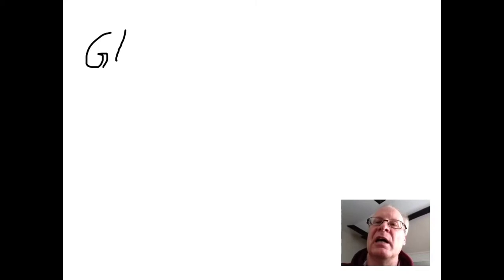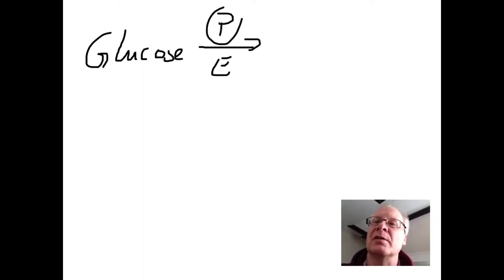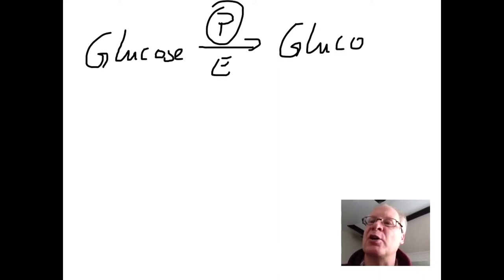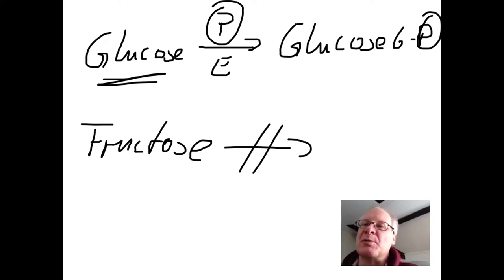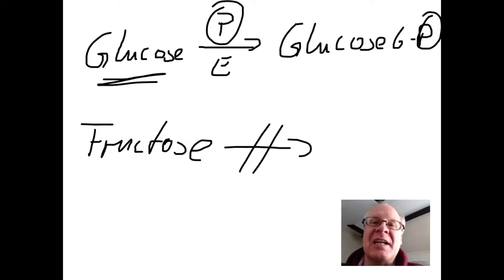It can also happen that an enzyme only takes glucose and adds a phosphate to give glucose 6-phosphate. If we offer fructose, for example, it would not work because it is the wrong substrate, and the enzyme catalyzes a very specific reaction — the addition of this phosphate, not the breakdown of glucose.